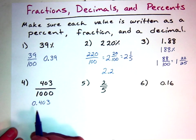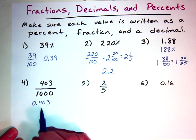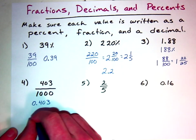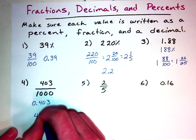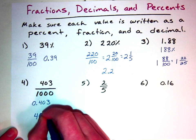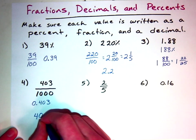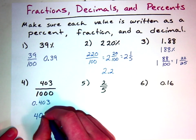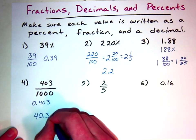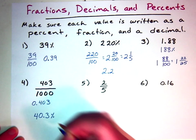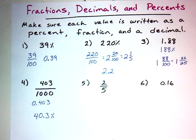From there, since it's a decimal, it's easy to turn into a percentage. I move the decimal two places to the right, and it gets me to 40.3%. Don't forget — if you're writing something as a percent, you need a percentage sign.